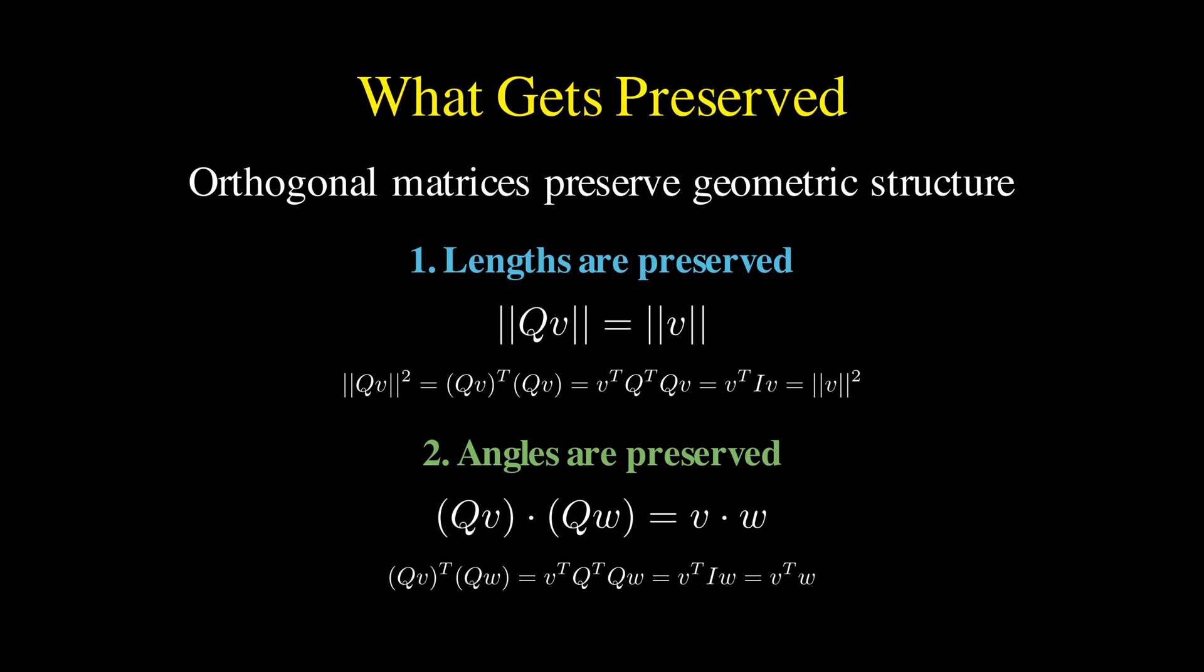And since the dot product determines the angle between vectors, this means angles are preserved too. And here is the key insight.